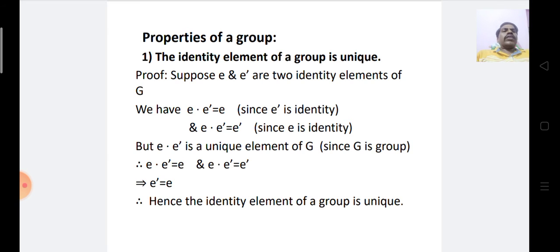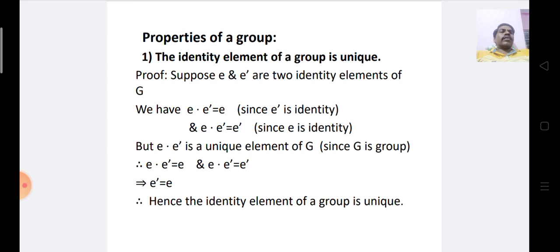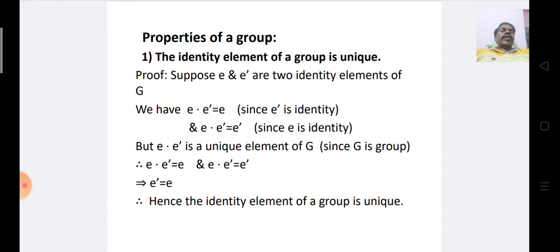Suppose E and E' are two identity elements of G. Since E' is an identity element, we have E · E' = E. Since E is an identity element, we have E · E' = E'. From these two equations we conclude that E' = E. Hence, the identity element of a group is unique.